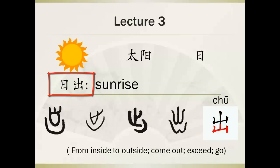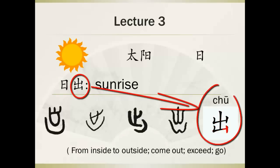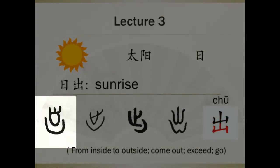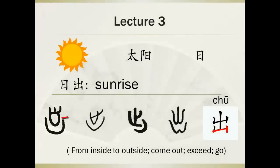This zi, 出 (chū), reads chū. This picture in jiaguwen looks like a foot stepping out of a cave — that's where the jiaguwen form comes from. It means from inside to outside: come out, exit, or go.